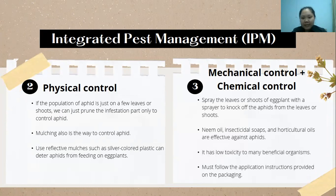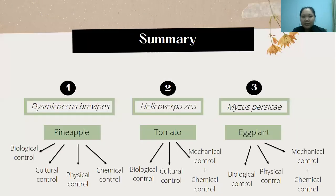The last method is mechanical and chemical control. We can spray the leaves or shoots of the eggplants with a sprayer to knock off the aphids. We can also use insecticidal soap to remove and control the aphid population, which has low toxicity to many beneficial organisms.